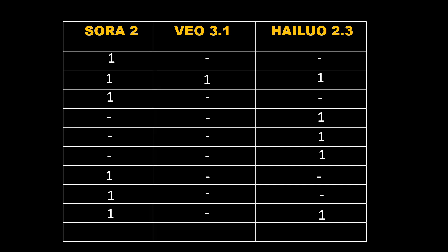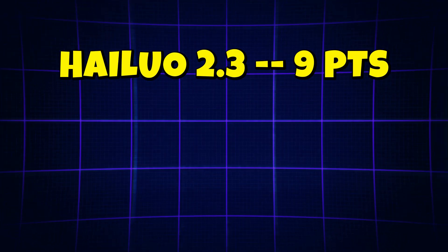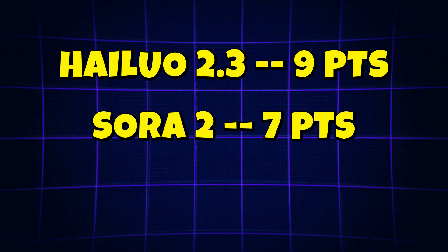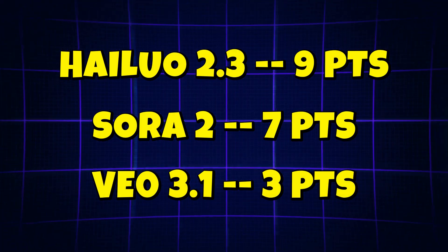Here are the results from our human-based prompt tests: Sora 2 is leading with 6 points, HiLaw 2.3 follows closely with 5 points, and VO 3.1 sits at 1 point. Combining everything — non-human and human prompts — here's the overall scoreboard: HiLaw 2.3 comes out on top with 9 points, Sora 2 has 7 points, and VO 3.1 finishes with 3 points.